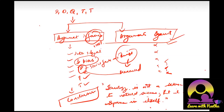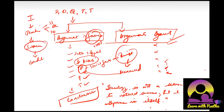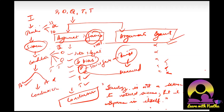Let me give you the structure once again: introduction, then thinkers — Saint Simon, Auguste Comte, Herbert Spencer — then science, then the debate, then the five conditions: intersubject reliability, objectivity, quantifiability, theory building, and testing. Then two arguments: arguments in favor and arguments against. Finally conclusion: sociology is not a science similar to natural science, but a science in itself. Science can be understood as a method of inquiry rather than a body of knowledge. Hope this is clear — let's get into the notes.